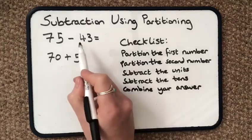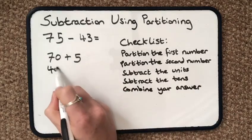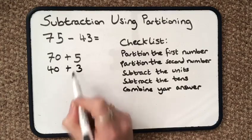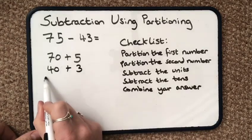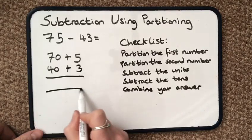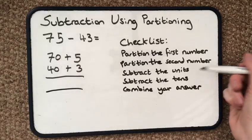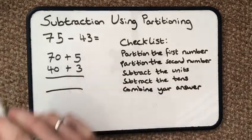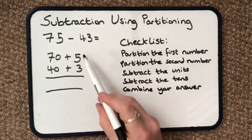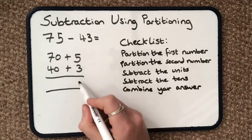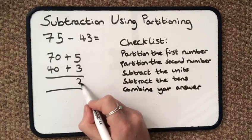Partition the second number, so 40 and 3. Then I'm going to write my equal sign. And it says subtract the units. We always start with the units because this can affect everything else behind it. So 5 take away 3 equals 2.